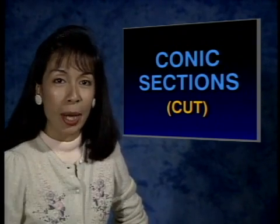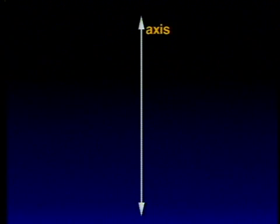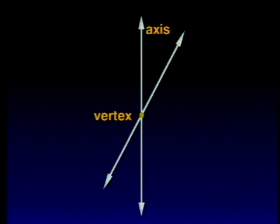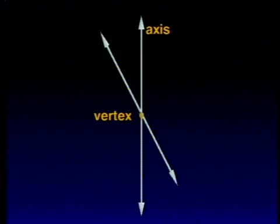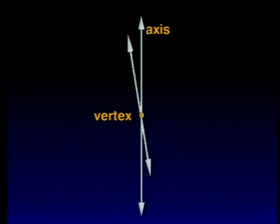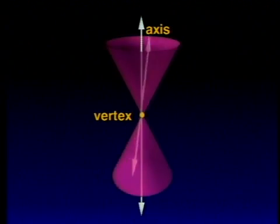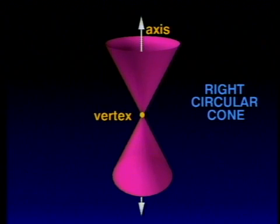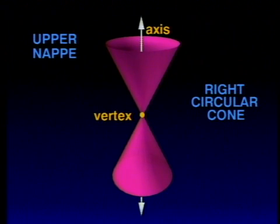Let me show you what I mean. Geometrically, I will start with a vertical line called the axis through a point called the vertex. Then I will choose another line through the vertex and rotate it so that it sweeps out a precisely circular path around the axis. I have now created a right circular cone, which consists of two circular parts called an upper nap and a lower nap.